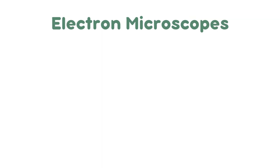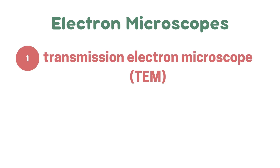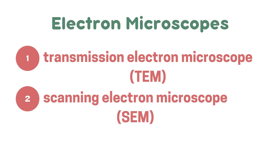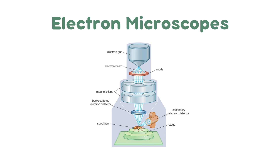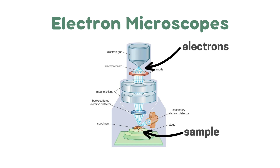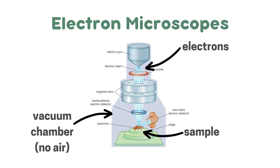Now we're on to electron microscopes, and there are two types you need to know about: the transmission electron microscope, otherwise known as the TEM, and the scanning electron microscope, also known as the SEM. You don't need to know what electron microscopes look like. All you need to know is that they consist of electrons, the sample, and a vacuum chamber which has no air — which is the reason the organism must be dead.